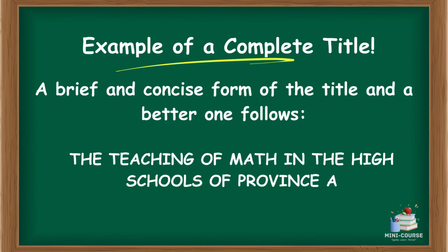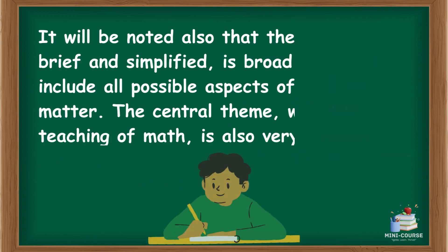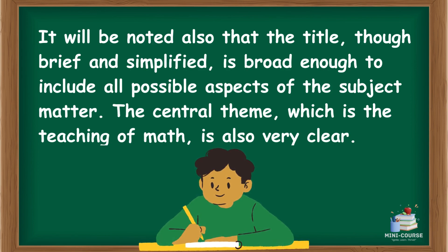A brief and concise form of the title, and a better one, follows: 'The Teaching of Math in the High Schools of Province A.' It will be noted that the population — the math teachers and students — as well as the period of the study, 2022-2023, are omitted in the second form, but they have to be mentioned in the scope and delimitation of the study. It will also be noted that the title, though brief and simplified, is broad enough to include all possible aspects of the subject matter. The central theme, which is the teaching of math, is also very clear.